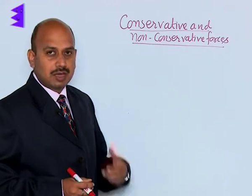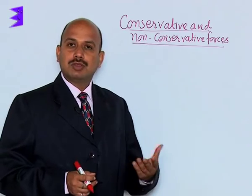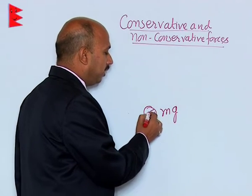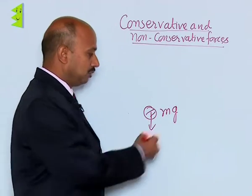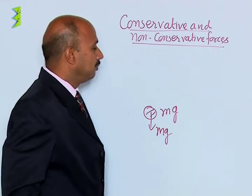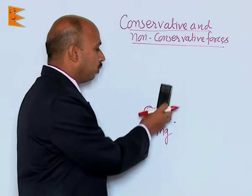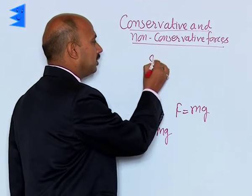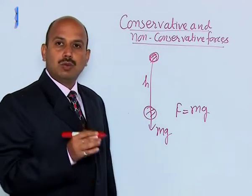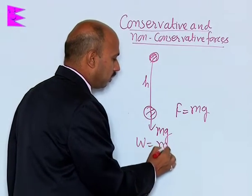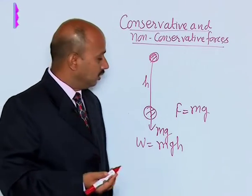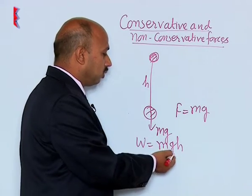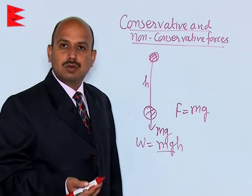Take the example of conservative forces — gravitational force is an example. Suppose you have a body whose weight mg is acting downward. You apply a force equal to mg and take the body to height h. Then the work done by the force is W = mgh, because the direction of the force applied and h are in the same direction, and the force equals the gravitational force mg.